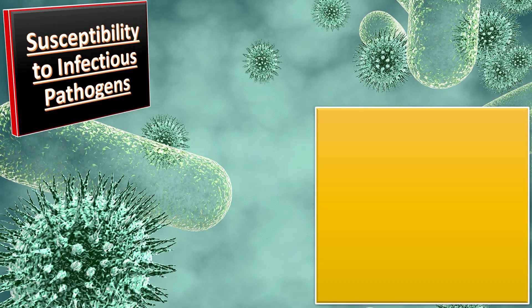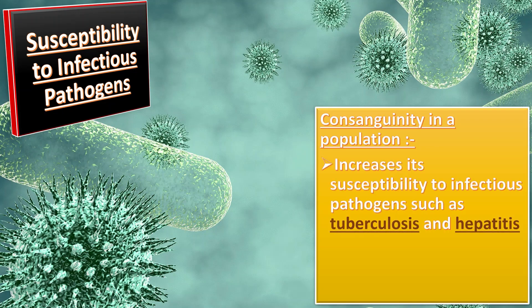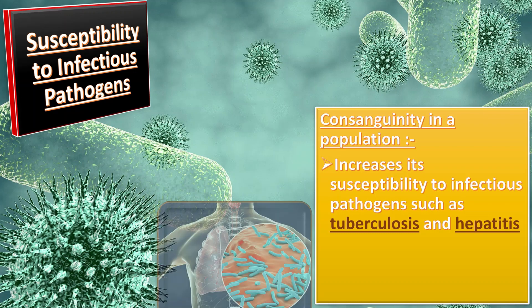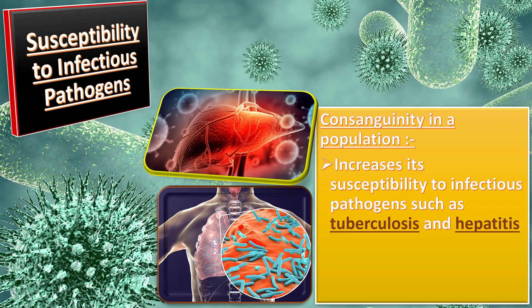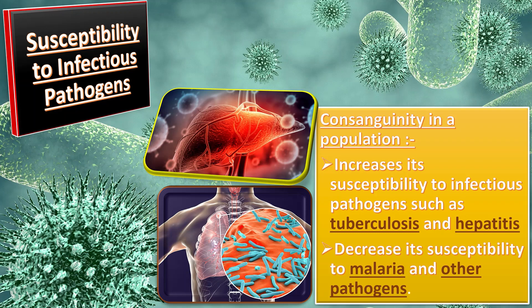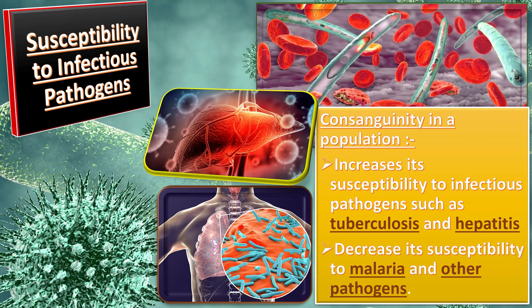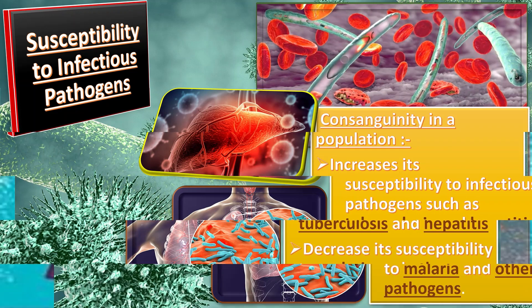Along with autosomal recessive genetic disorders, there is also increased susceptibility to infectious pathogens in consanguineous populations. Consanguinity in a population increases susceptibility to infectious pathogens such as tuberculosis and hepatitis, but may decrease susceptibility to malaria and other pathogens.